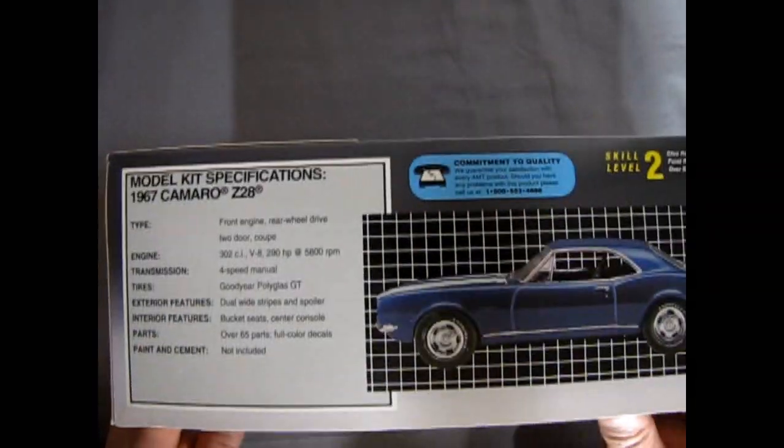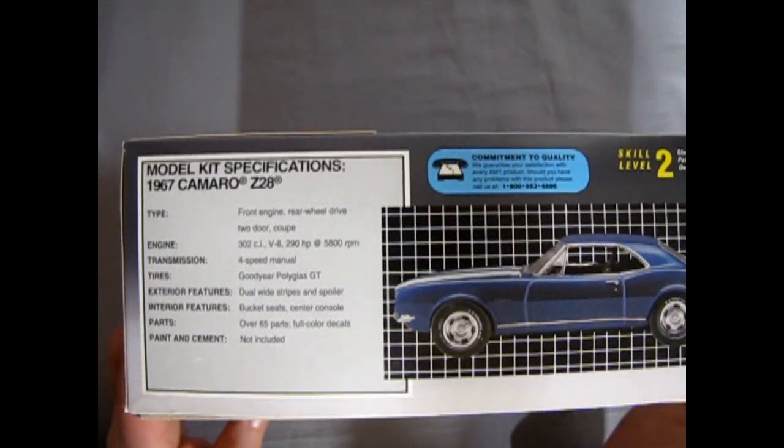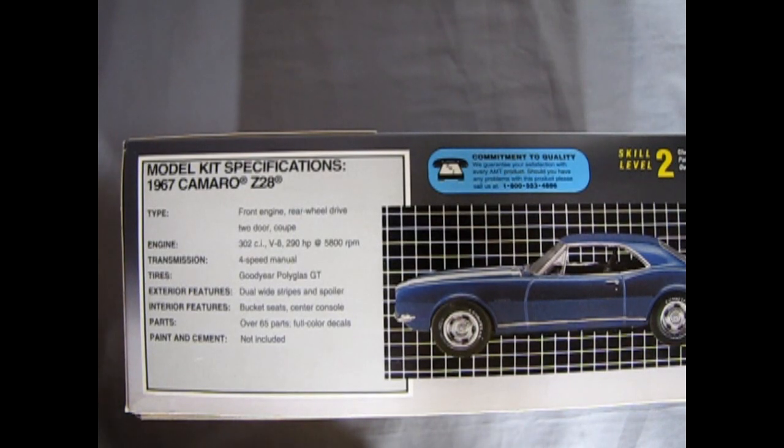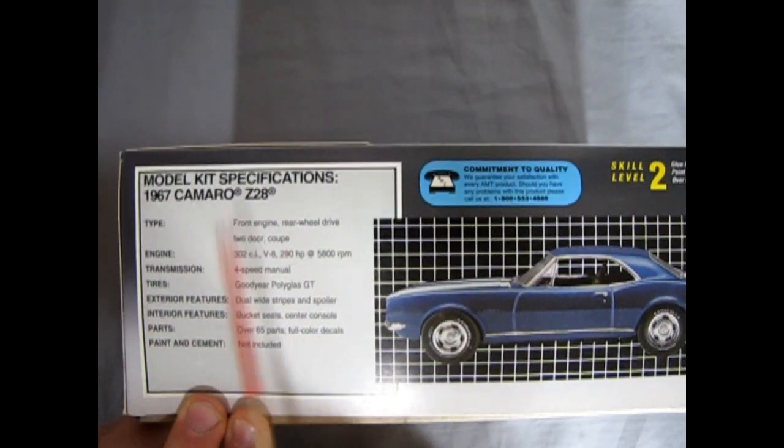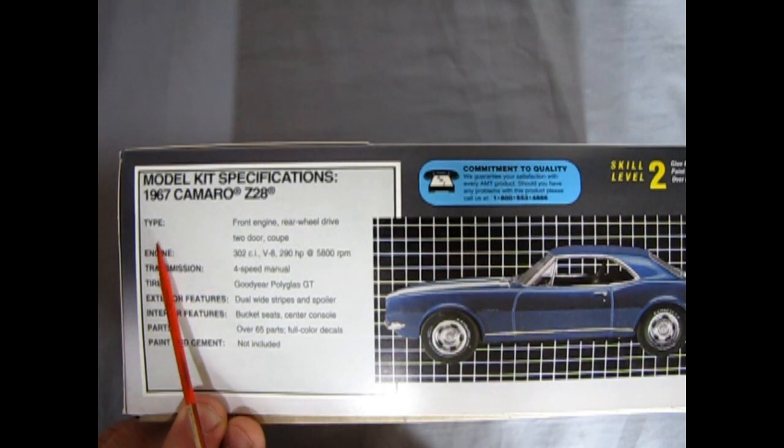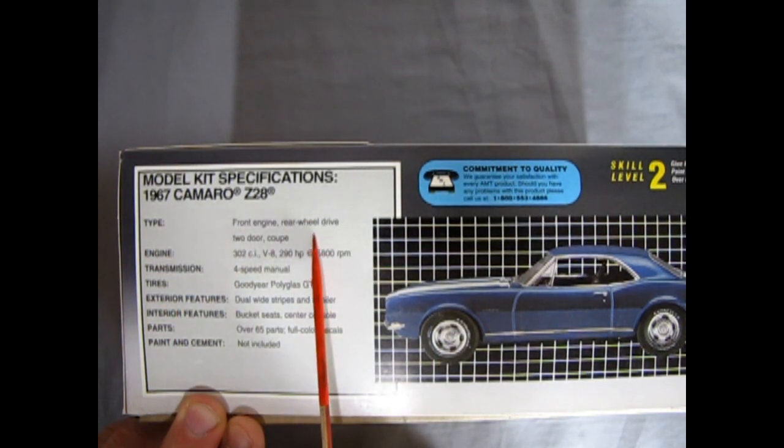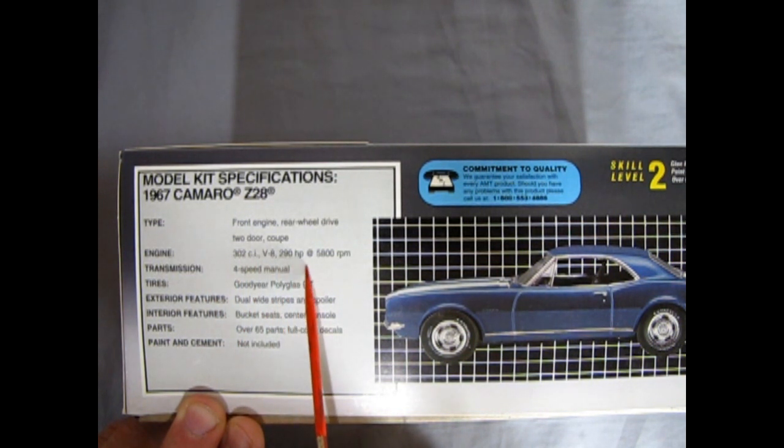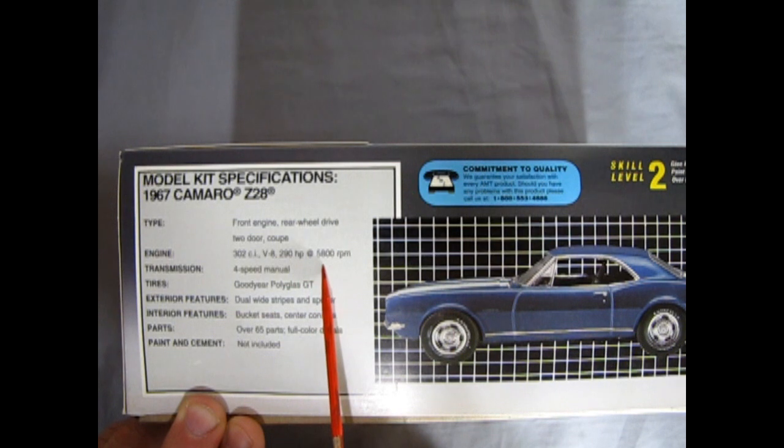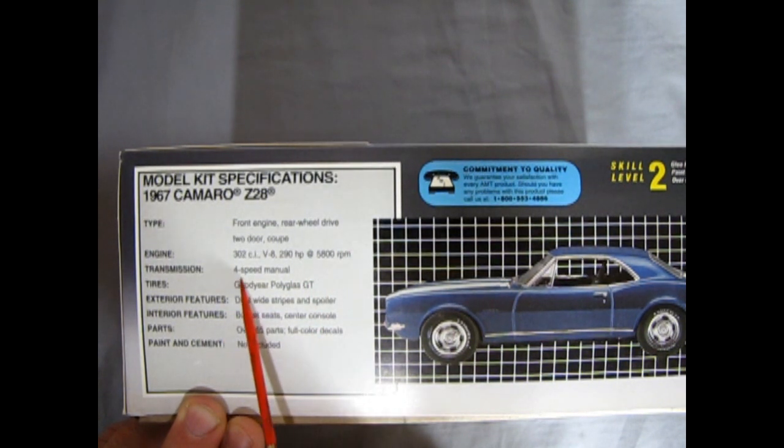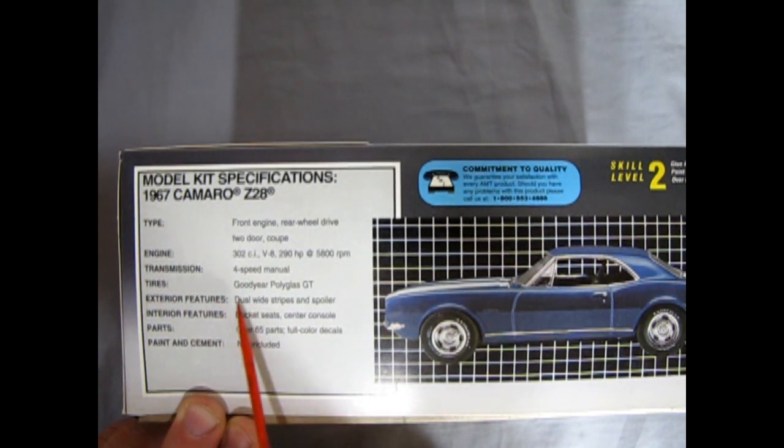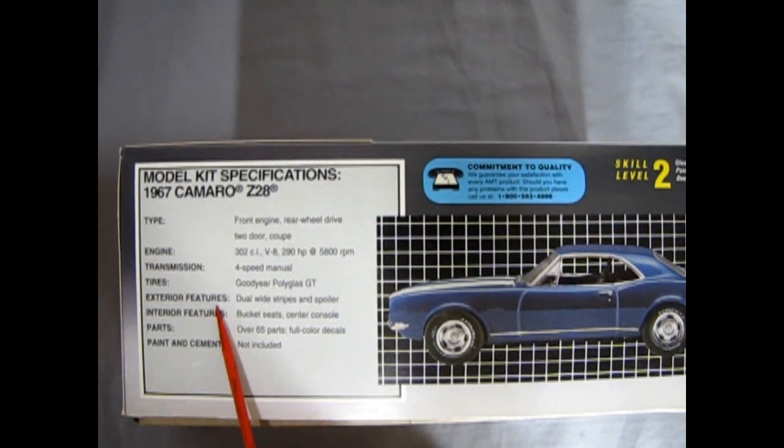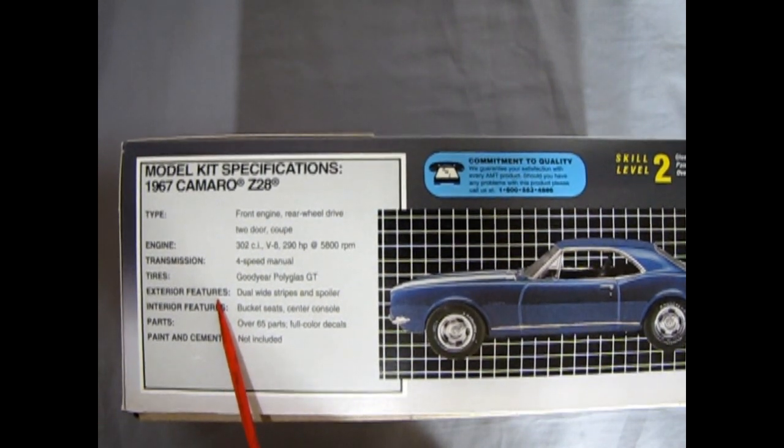All right, so if we take a look at our box here we get some nice details. Here we have the model kit specifications for the 69 Camaro Z28. The type is a front engine rear wheel drive two-door coupe. The engine is the 302 cubic inch V8, 290 horsepower at 5,800 rpm. 4-speed manual transmission. Tires are Goodyear Polyglas GTs.